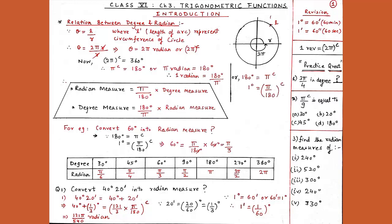As you can see in the box: radian measure equals π upon 180 into degree measure, and degree measure equals 180 upon π into radian measure. In the sexagesimal system, 1 degree equals 60 minutes and 1 minute equals 60 seconds.